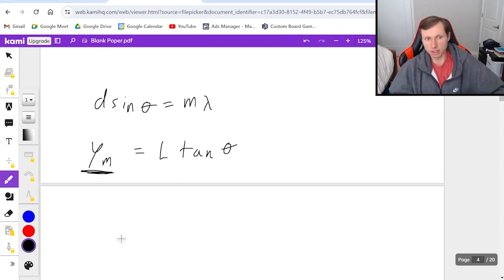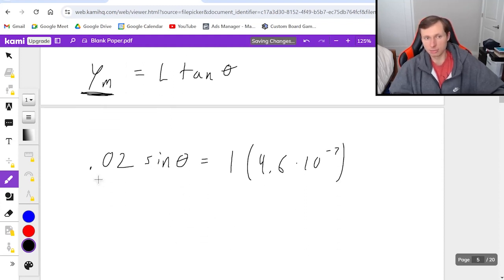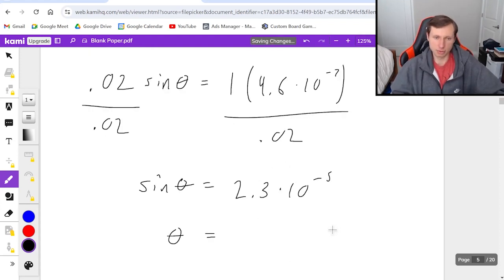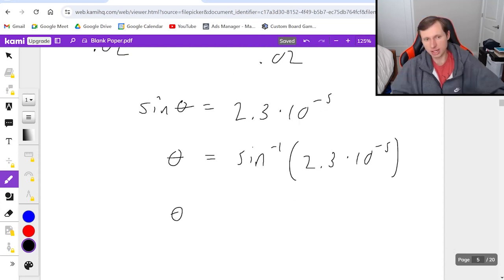d = 0.02 m, so 0.02 sin θ = mλ. Starting with m = 1: 0.02 sin θ = (1)(4.6 × 10^-7). Dividing both sides by 0.02 gives sin θ = 2.3 × 10^-5. Taking the inverse sine: θ = 0.0013 degrees.